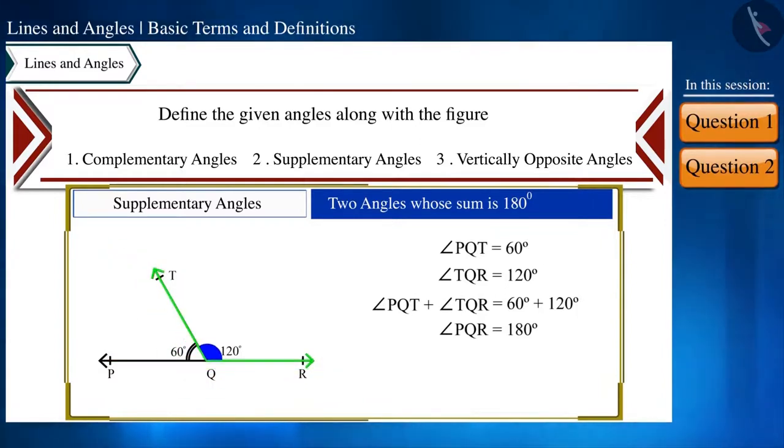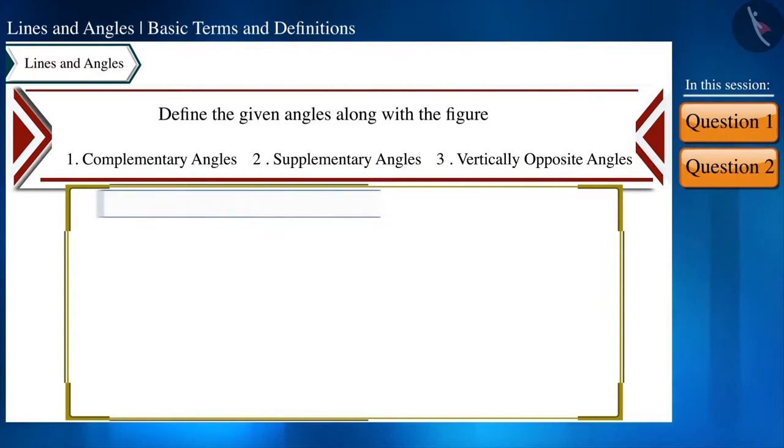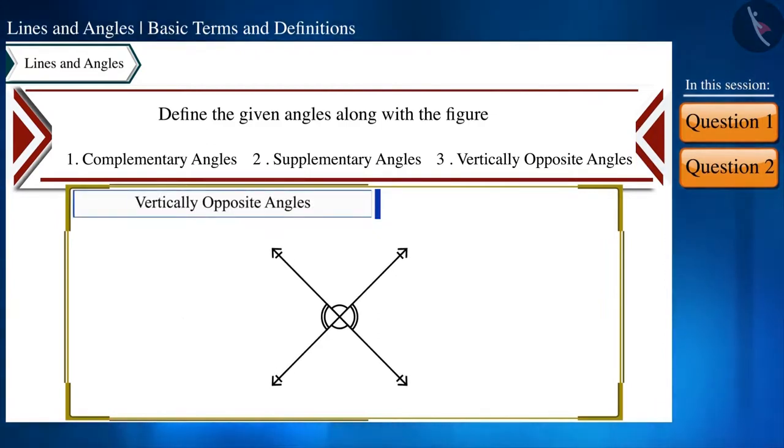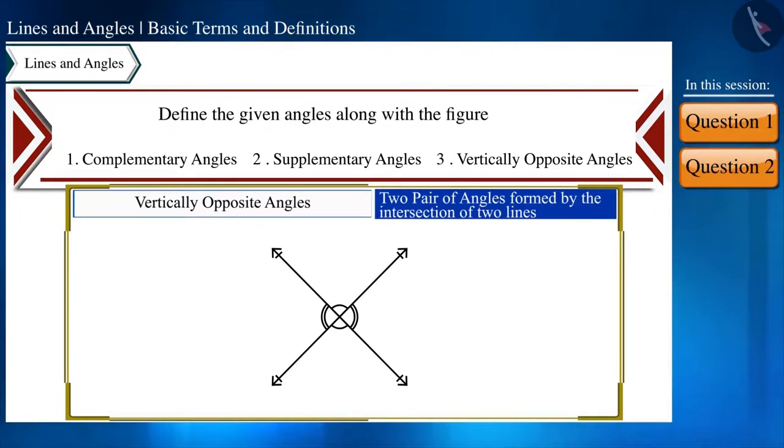Now let's see the definition of vertically opposite angles. When two lines intersect each other, then the vertically opposite angles are formed.